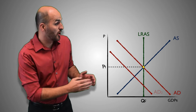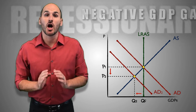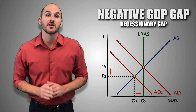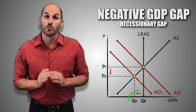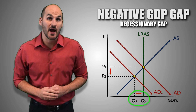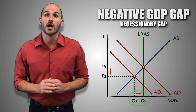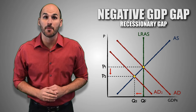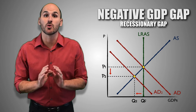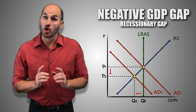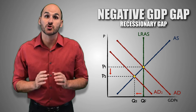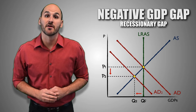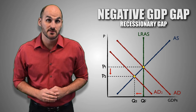When aggregate demand is too low, the economy will be experiencing a recessionary gap. Real GDP will contract, and the economy will be producing output at too slow a rate, causing cyclical unemployment and driving unemployment above 6%.